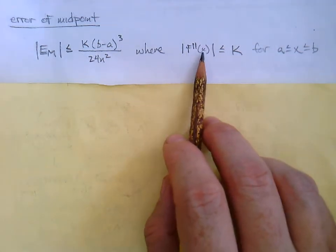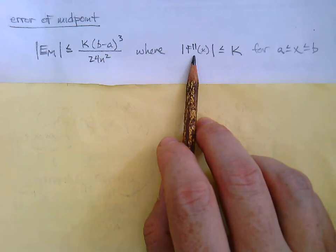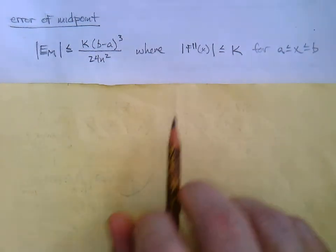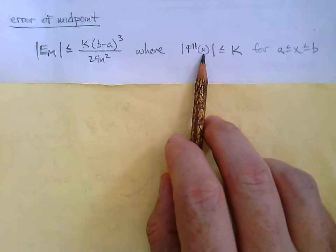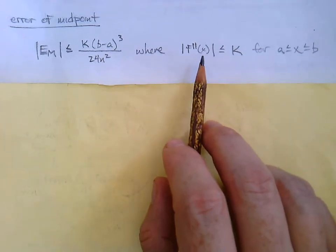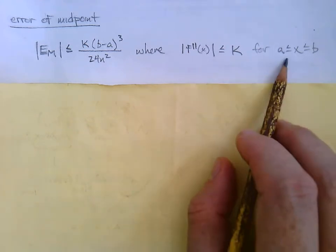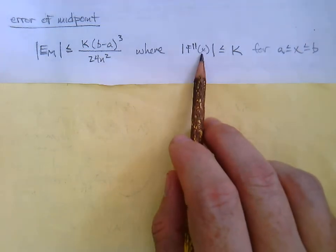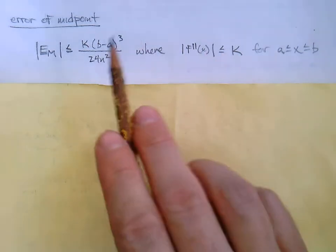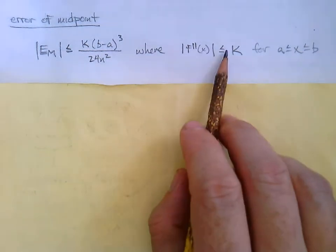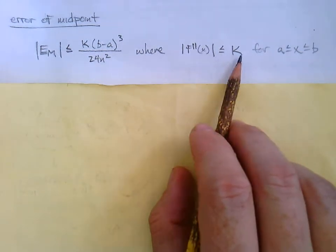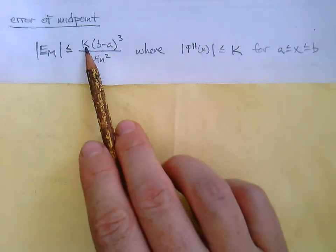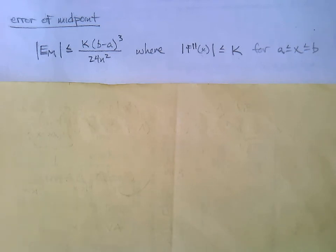Here's how you find K: the absolute value of the second derivative of your function is less than or equal to K for x somewhere between a and b. We try to find the value of x between a and b that maximizes the second derivative — the value that makes it the biggest possible. When we find that number, we take it as K. We say less than or equal to K because we could take K to be larger, but we'll just take whatever that maximum value is.